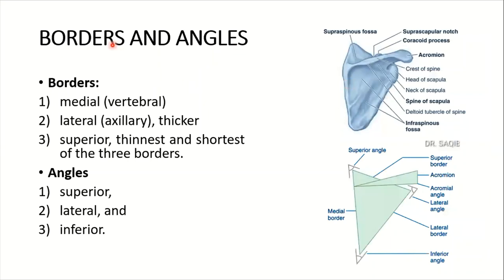There are three borders and three angles. First, the medial border — you can see this is the medial border on the dorsal surface. Then is the lateral or axillary border, which is the thicker one. The medial or vertebral border is the thinner one. Then is the superior border, which is the thinnest and shortest of the three borders.